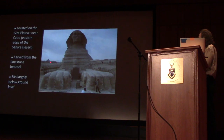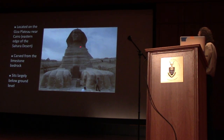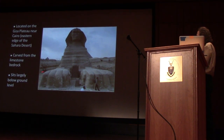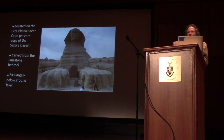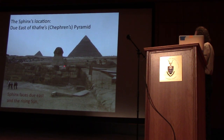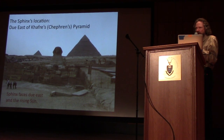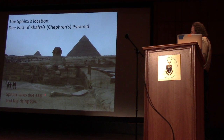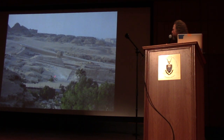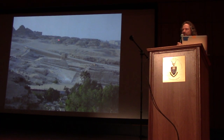This is the Sphinx enclosure — these are the back walls. We're looking up at the Sphinx, which is carved from limestone bedrock, and it sits largely below ground level. The body is below ground level. It sits due east of the second pyramid, known as Khafre's Pyramid or Chephren's Pyramid, dated to about 2500 BC, and it faces due east to the rising sun. Here's a view from the south looking north, showing how it sits in the enclosure — only the head was initially above ground level.